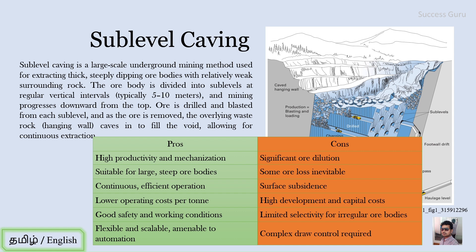Fourth, it has a low operating cost per ton. The main method of removing the ore body is blasting and removal, similar to open quarry work except it is done below the surface. This results in a lower cost per ton of ore removed from the ore body.